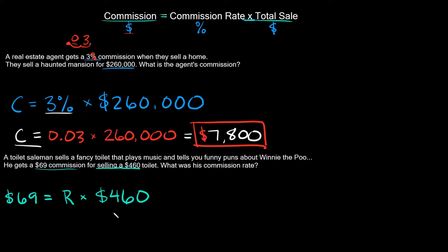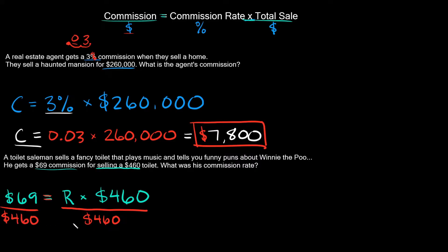To solve for R, we want to isolate the variable by itself on one side of the equation. To undo the multiplication, we divide. We divide both sides by $460 — whatever you do to one side you have to do to the other. The $460s cancel out, leaving R equals 69 over 460.